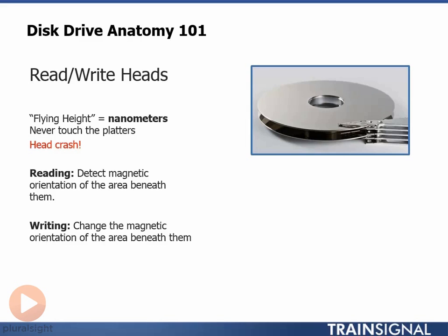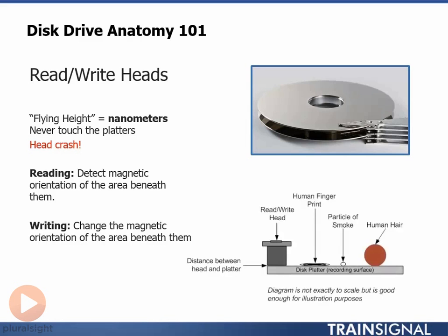Let's recap with a picture. The read-write heads never touch the platter surface — if they do, it's going to be a bad day if you haven't protected that data. Although they don't touch the platter surface under normal operation, they hover insanely closely — we're talking nanometers away. As we can see in this picture, the distance between the read-write heads and the surface of the platter is less than a smoke particle, less than the depth of a human fingerprint, less than a dust particle, and way less than the diameter of a human hair.